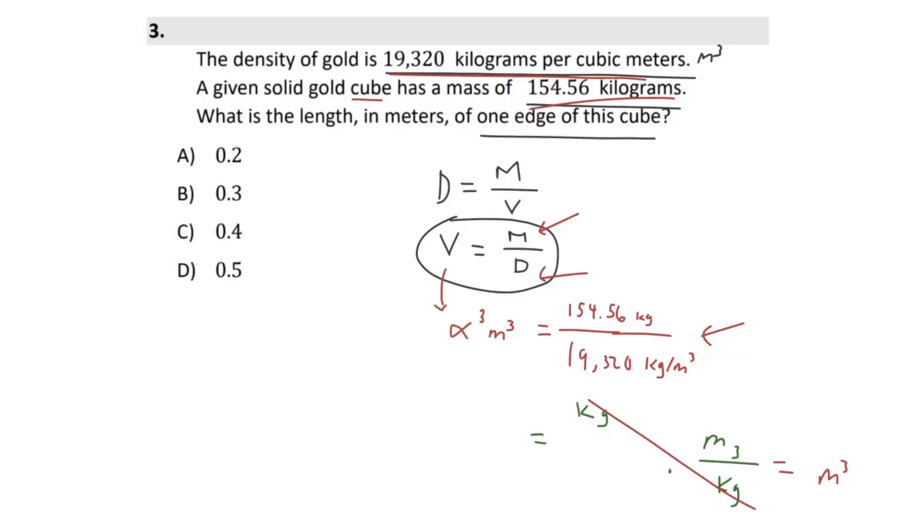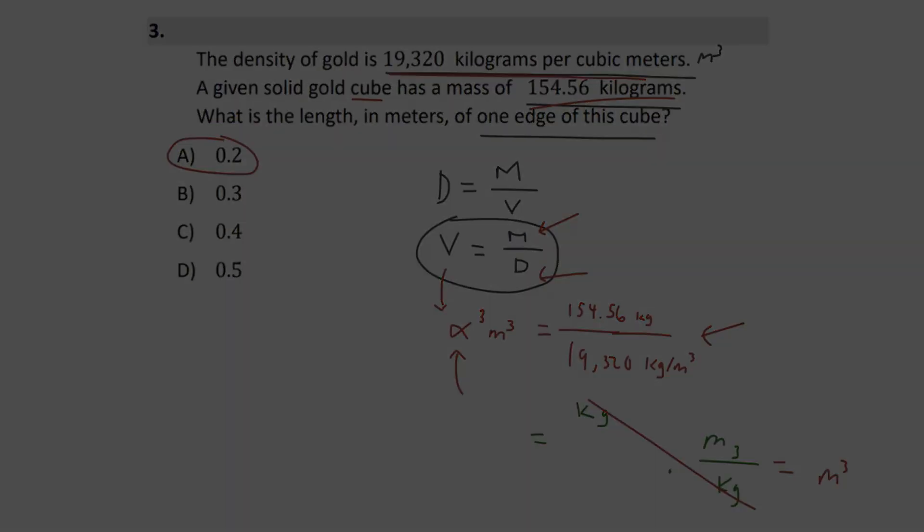So go ahead and take out a calculator and do the division on the right side and then take the cube root of both sides and isolate and find our actual alpha value, the edge of this cube. If you do all that, you should get the final answer choice of 0.2, answer choice A.